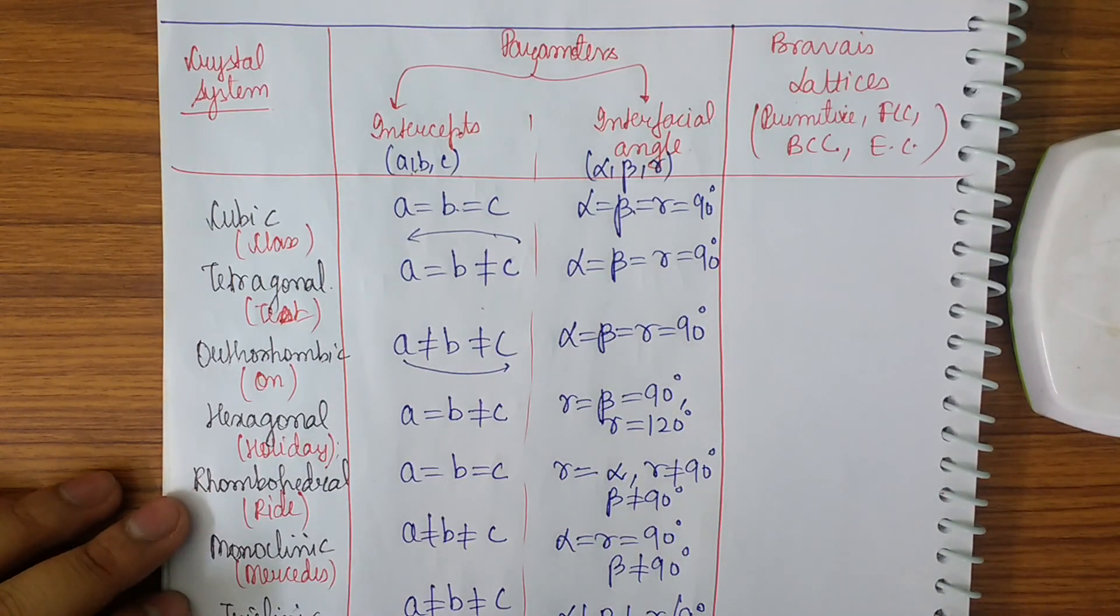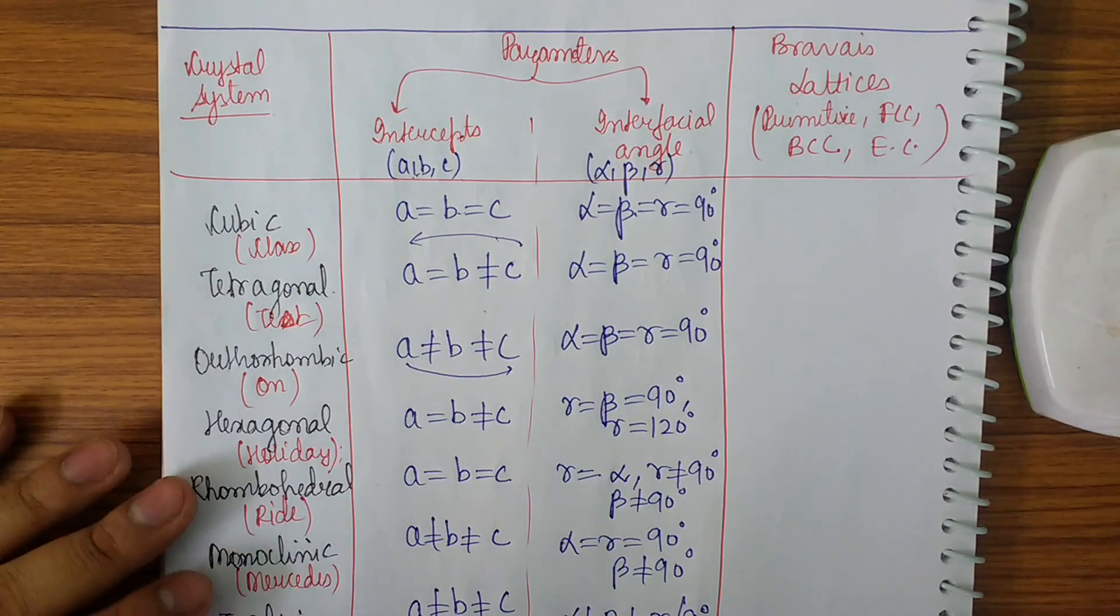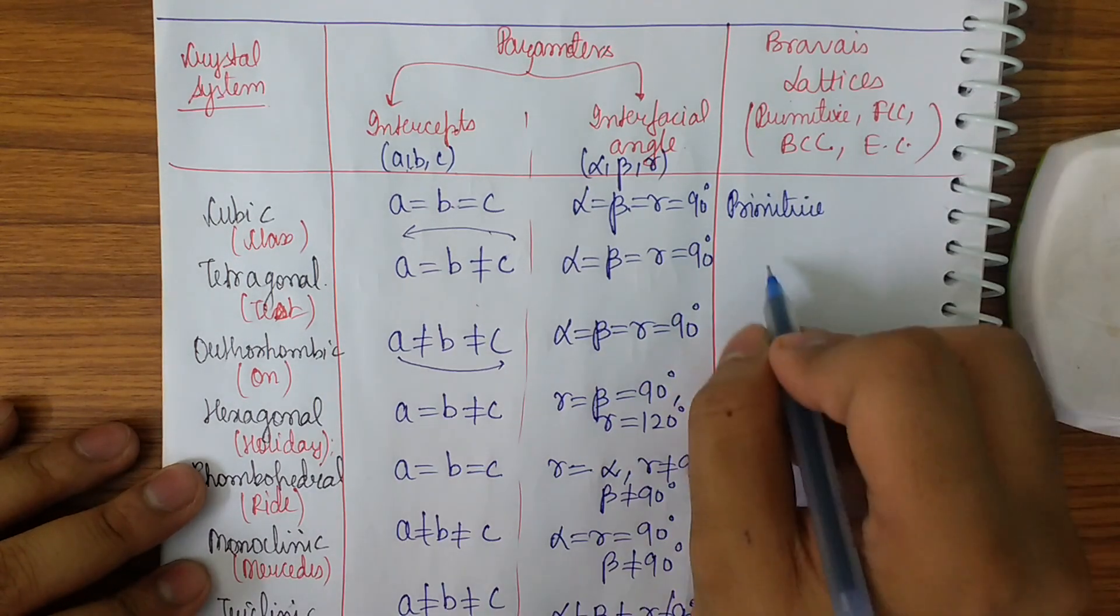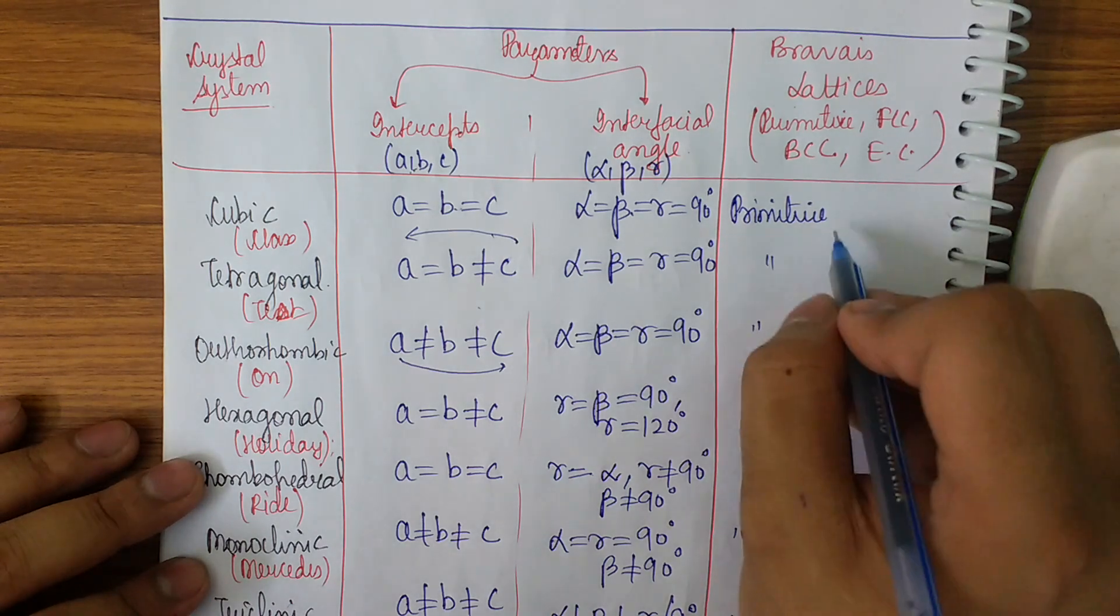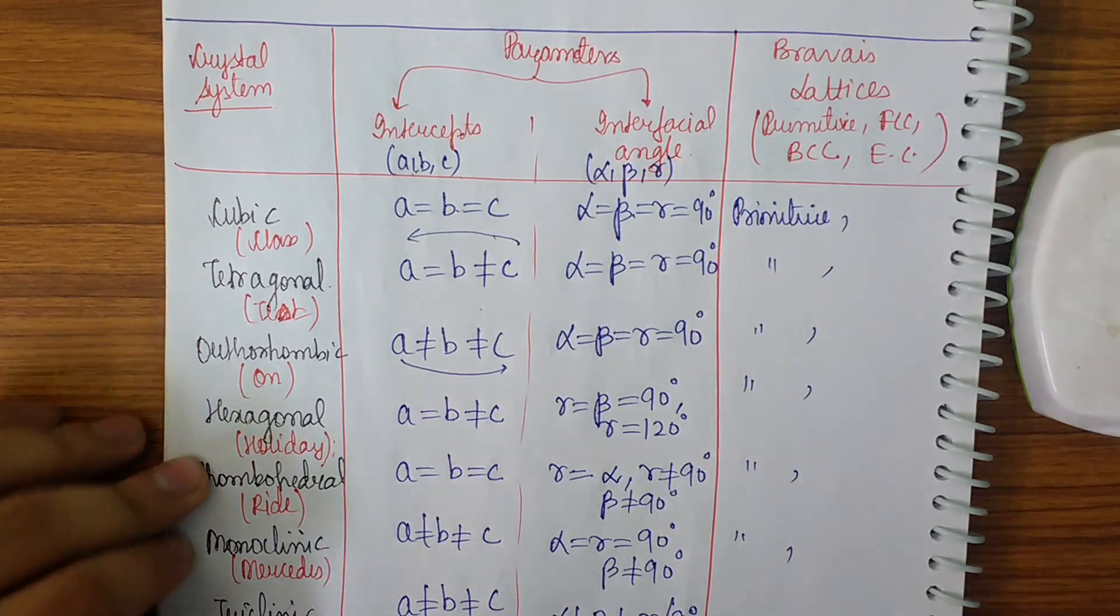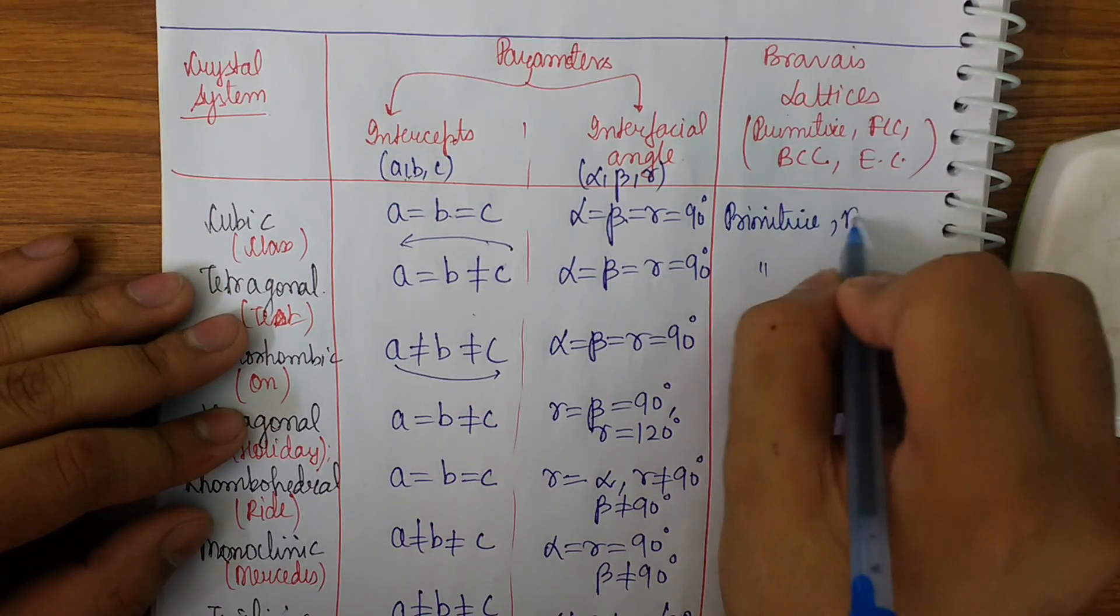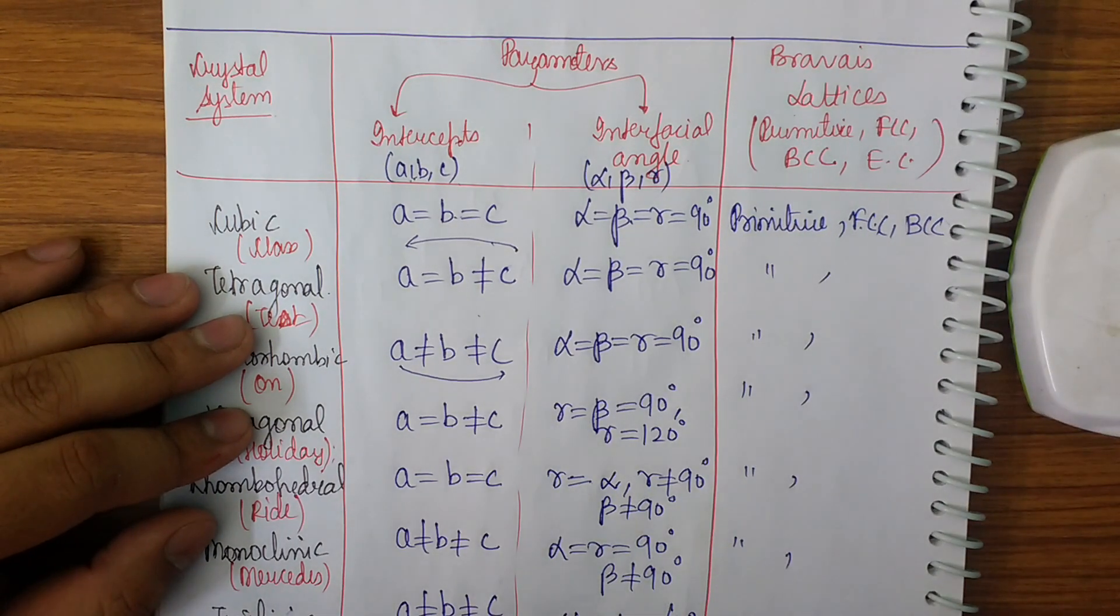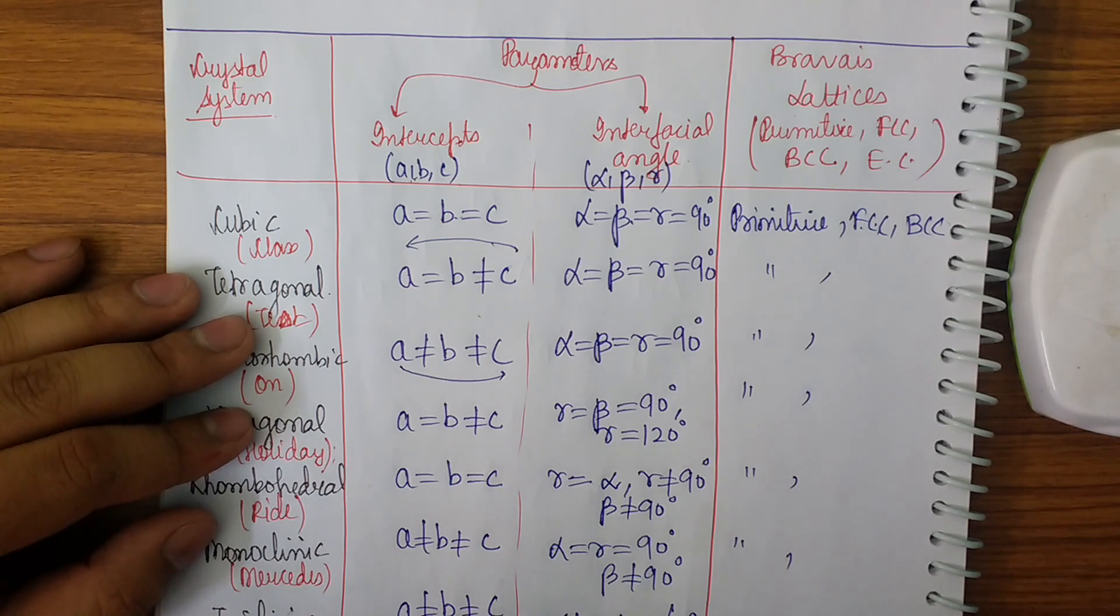How to learn the intercepts? a is equal to b is equal to c, then just reverse the direction of placing one not equal sign. Now let's learn Bravais lattice. First of all, in all of this you have to place primitive in all of them. What is primitive? Primitive is the basic cell that we take where the atoms are at the corners. In the first one place FCC and BCC, where FCC stands for face center and BCC stands for body center.